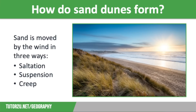Sand is moved by the wind in three ways. Firstly, saltation, which accounts for around 95% of all movement — this is where grains of sand bounce along as the wind picks them up and drops them again. We then have suspension, which accounts for around 4% of movement, where the wind picks up and carries grains of sand. And finally, creep, which only accounts for around 1% of all sand movement — this is where grains of sand collide and push other grains along.